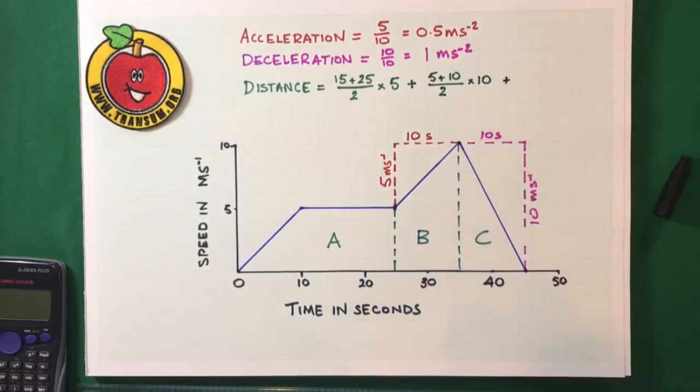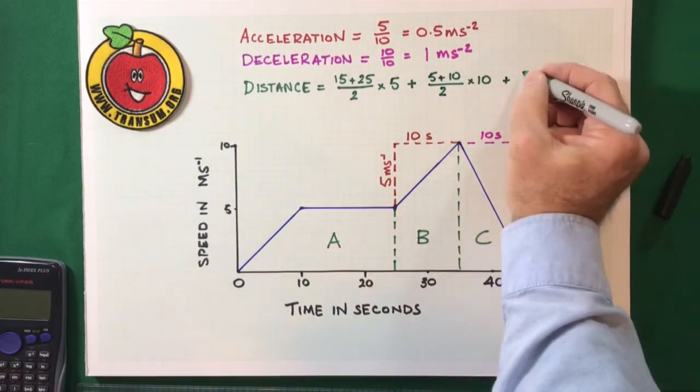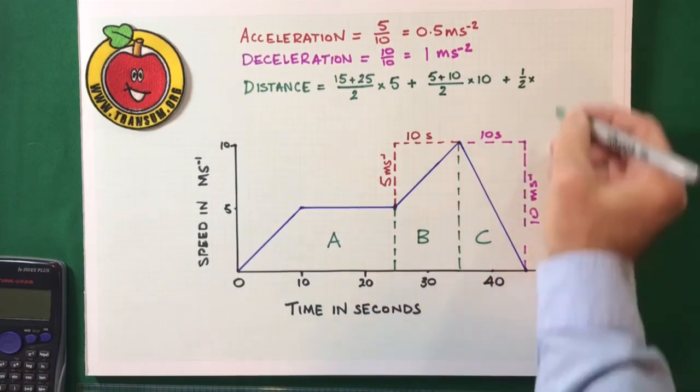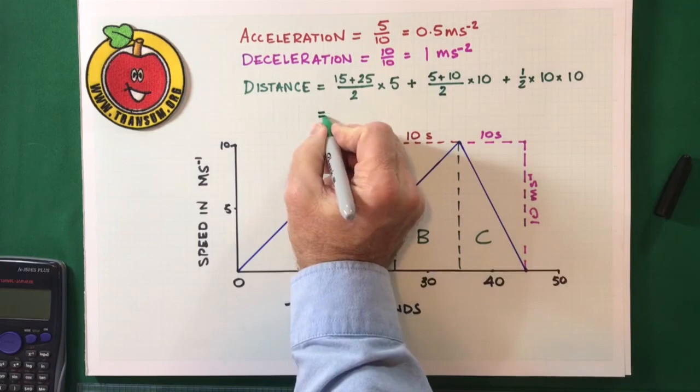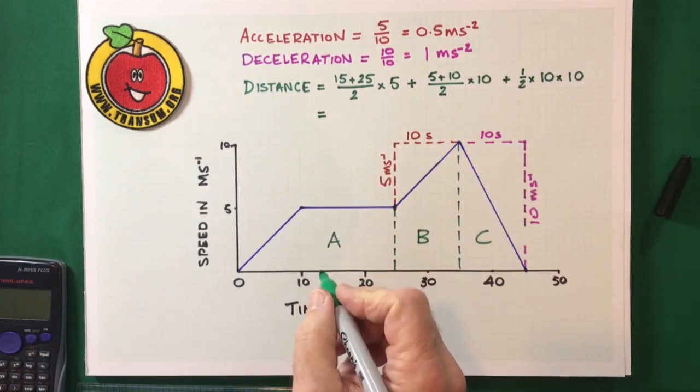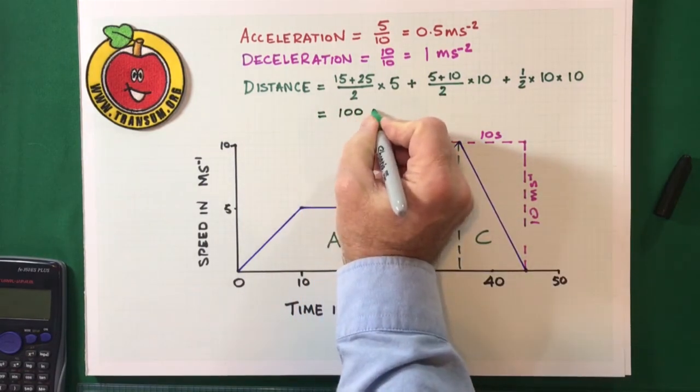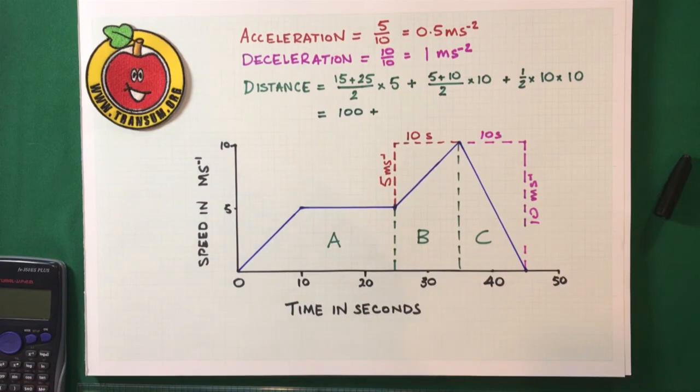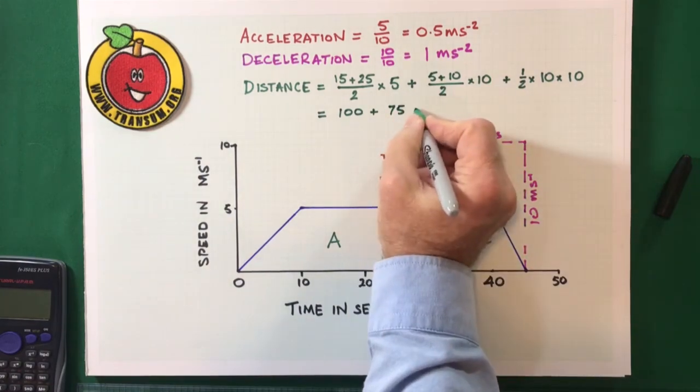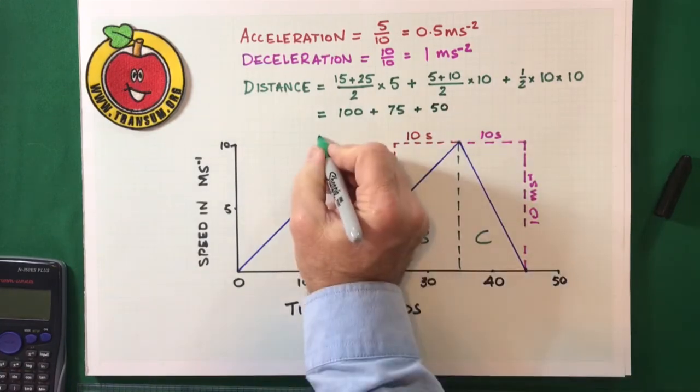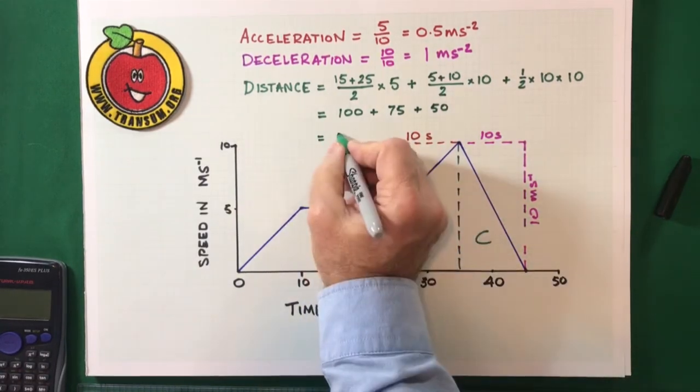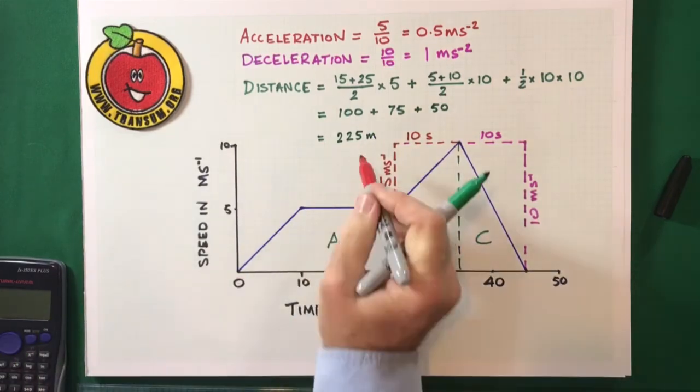And then, finally, shape C is a triangle. The area of a triangle is a half base times height. Okay. So, I need to work out all of these. 15 plus 25 divided by 2 multiplied by 5 is 100. And then, 15 divided by 2 is 7.5, 75. And then, 50 at the end. So, the total distance traveled by Anne on her skateboard was 225 meters.